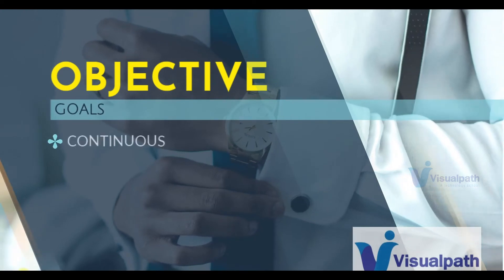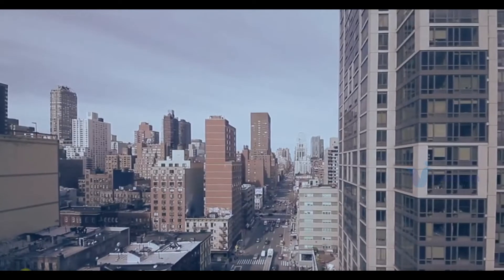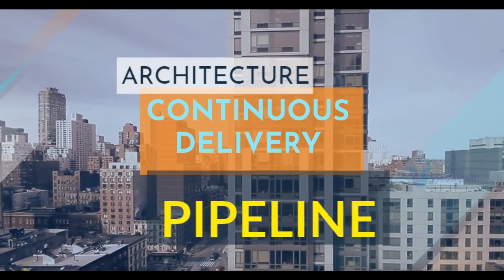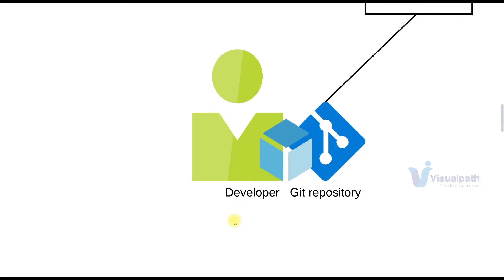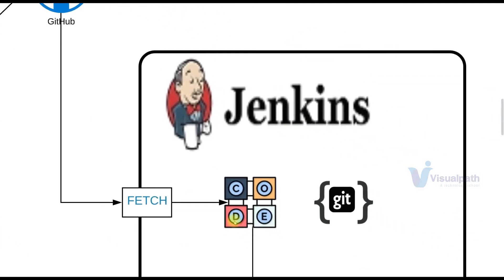The objective of this project is very simple — we have to do continuous delivery for Docker containers. Let's see the architectural design. When the developer makes a code change to the Git repository, it will be committed to GitHub. Jenkins is going to fetch the code, which will also include the Dockerfile used to build the Docker image, the Jenkinsfile for pipeline as code, and the Helm charts.